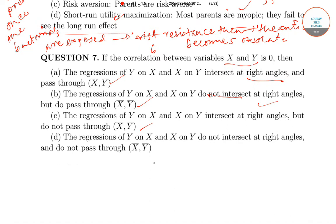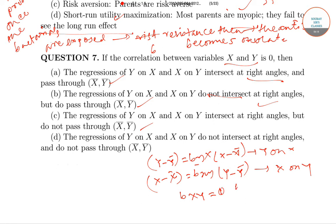So the lines can be written like this. Y minus Y bar equals to BYX times X minus X bar, which is the regression coefficient for Y on X. And this is X minus X bar equals BXY times Y minus Y bar, which is regression line X on Y. Now, if the correlation coefficient is 0, then the correlation between the two variables is 0, then BXY equals 0 and BYX is also 0. Then they do intersect at the right angles and pass through X bar Y bar.